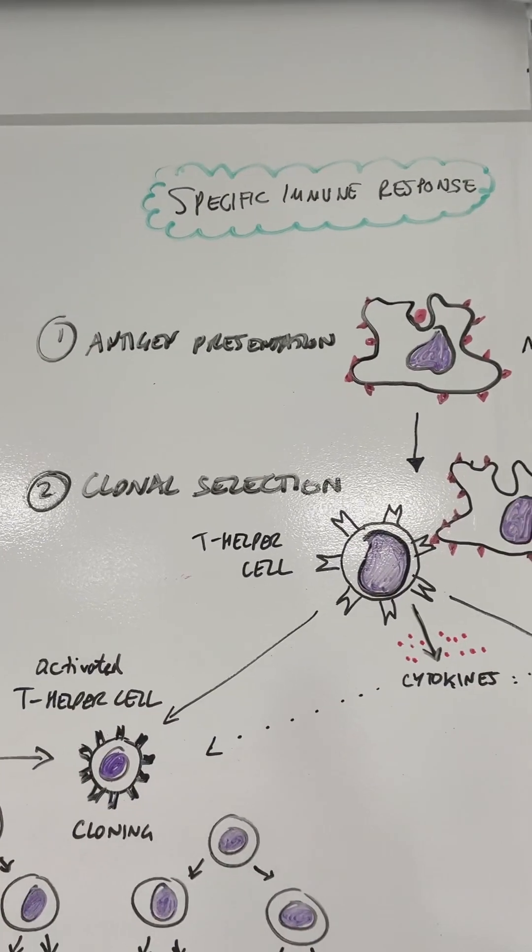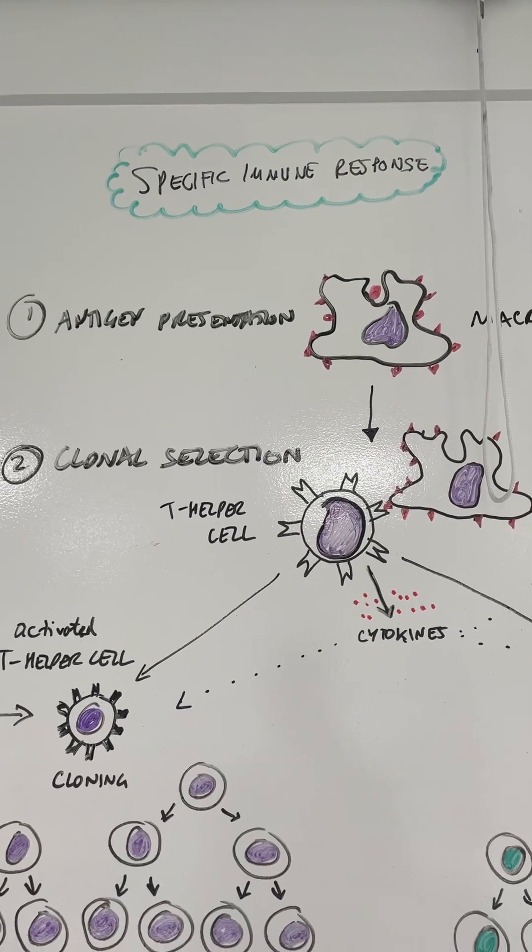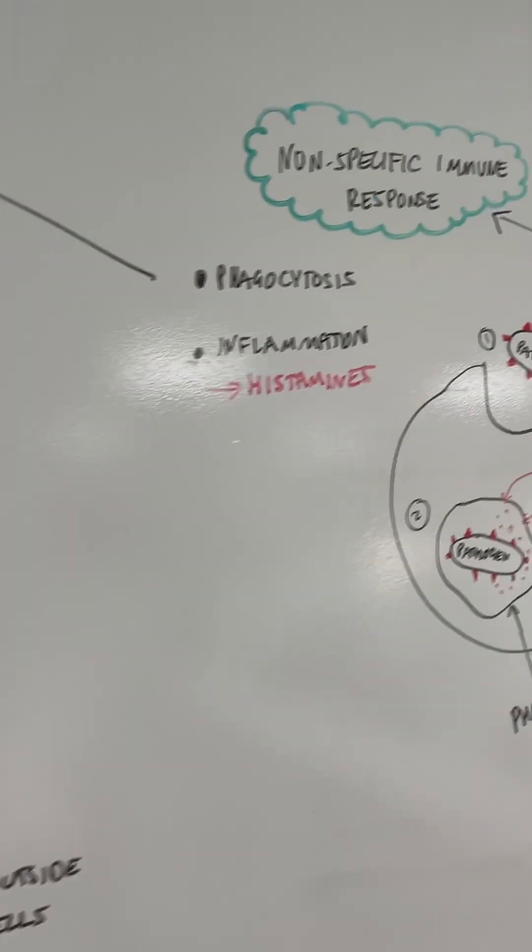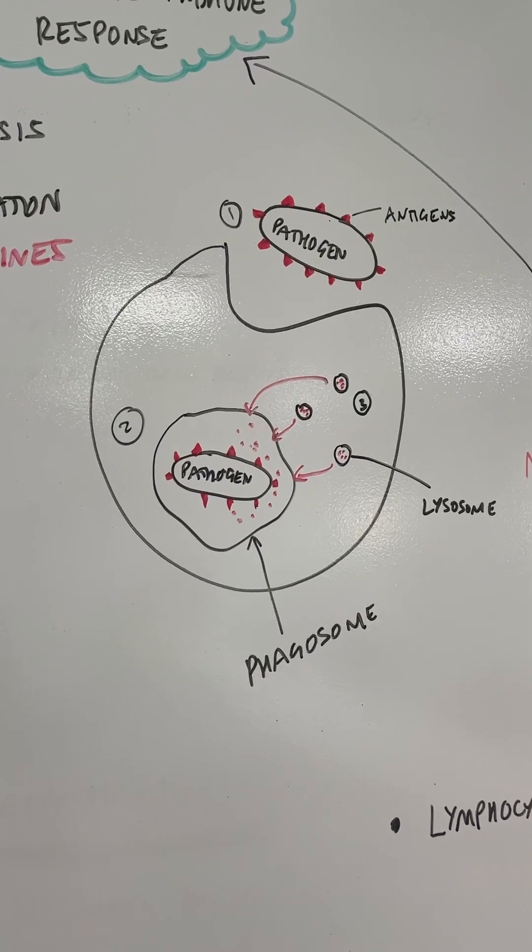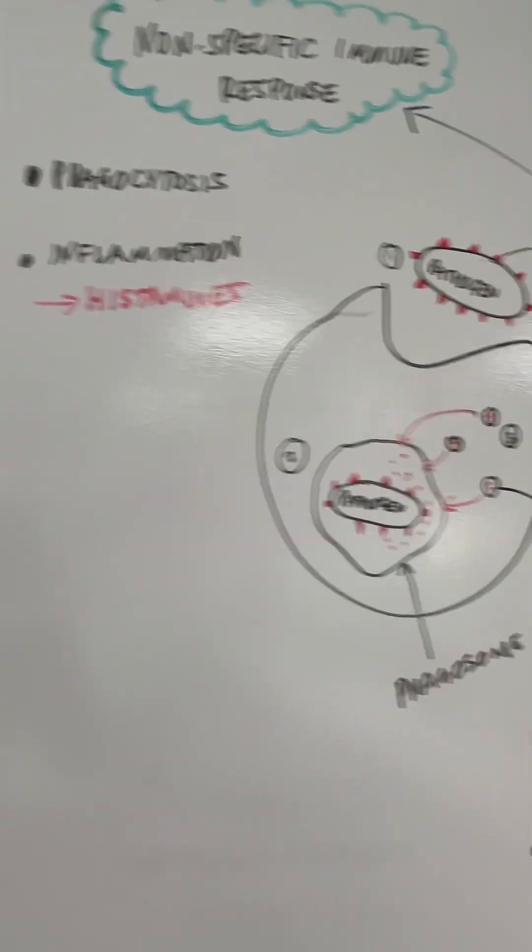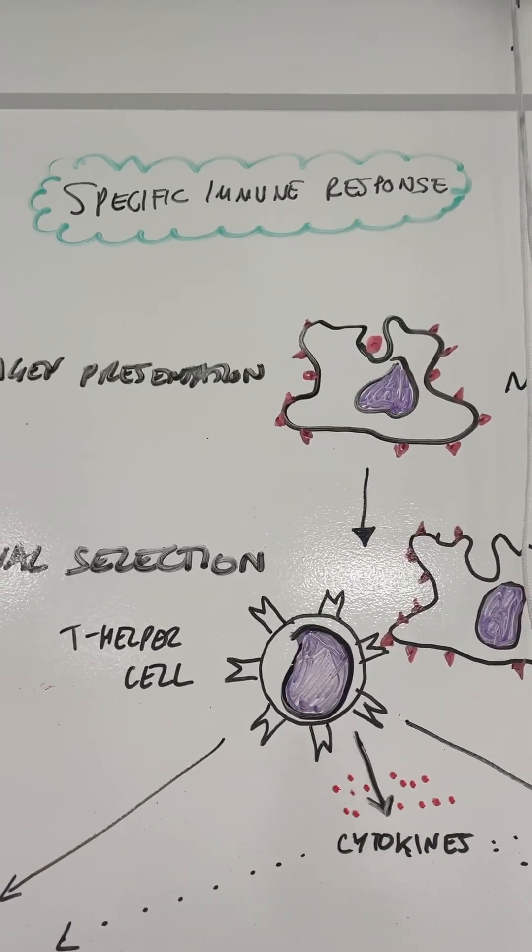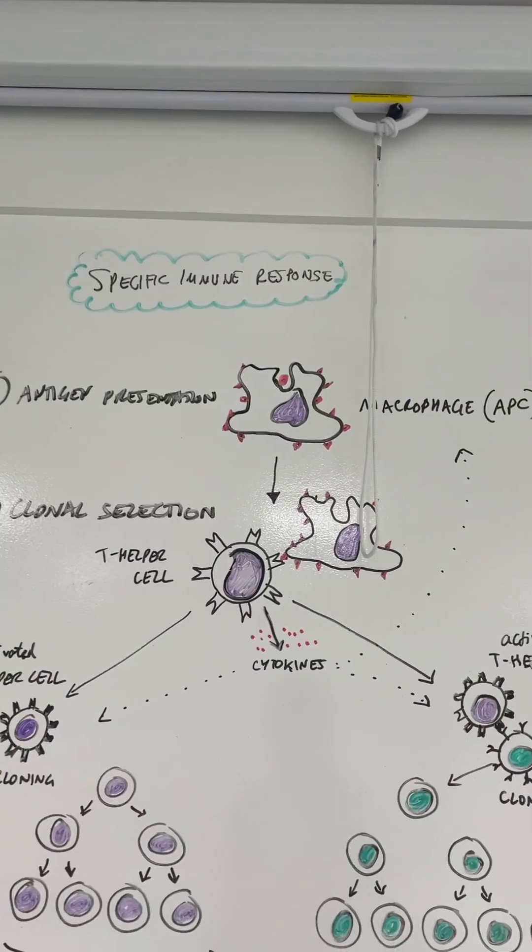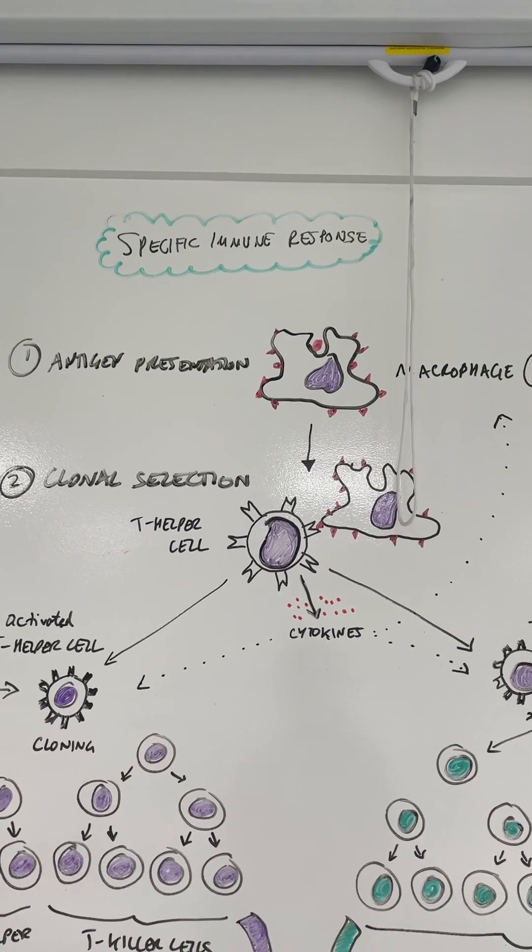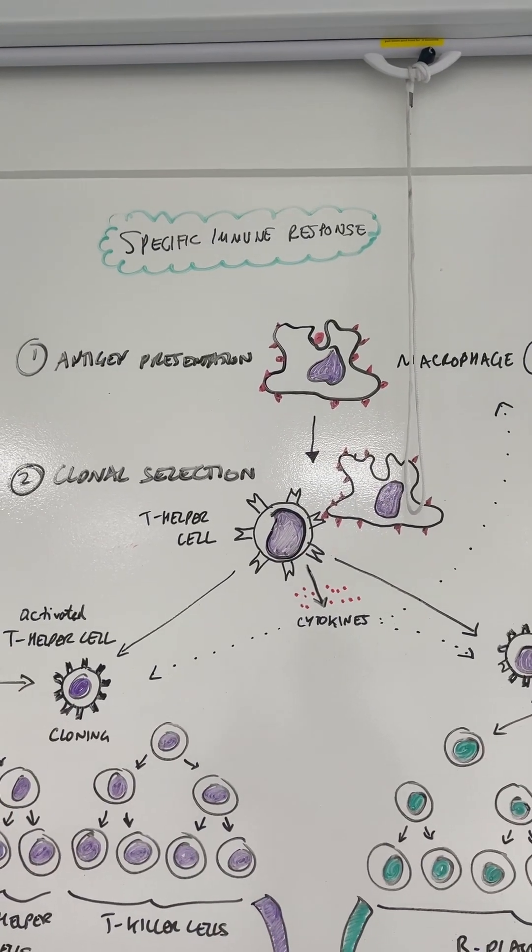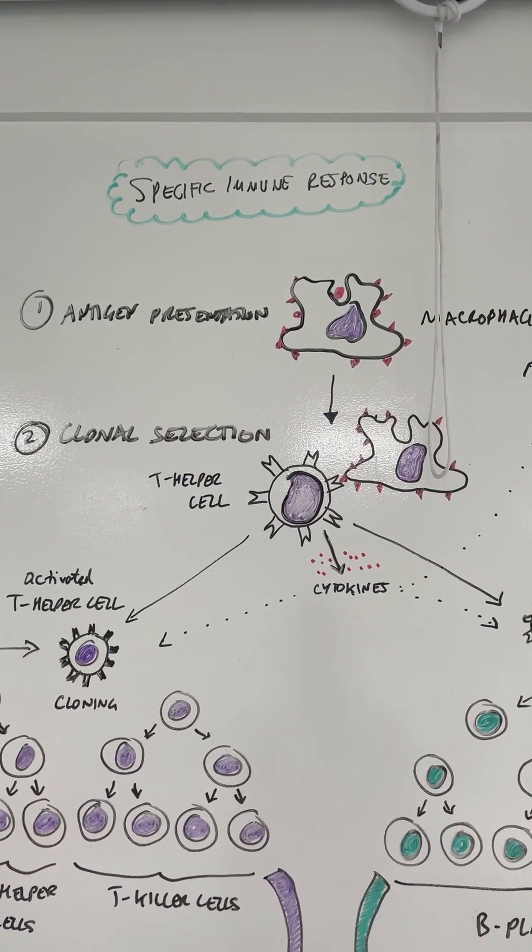Now what can happen in the specific immune response is that one of those macrophages from the phagocytosis can incorporate the antigens from the pathogen onto its surface and become what we call an antigen-presenting cell, an APC. It almost puts the antigen on its surface like a little flag which allows for something called clonal selection.